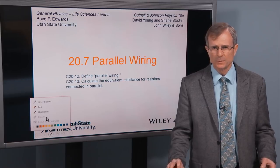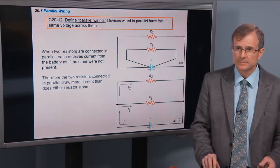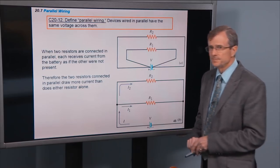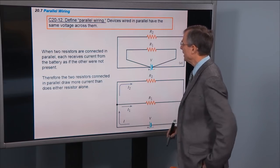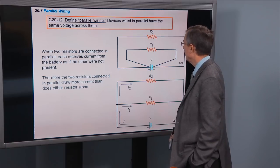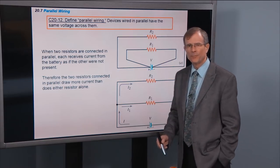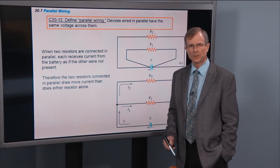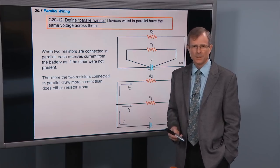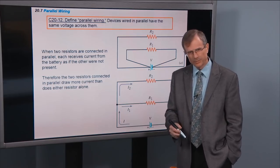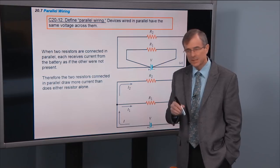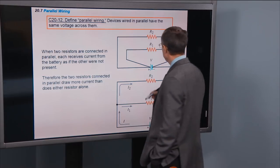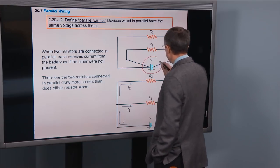First of all, let's define parallel wiring. Devices wired in parallel have the same voltage across them. You can't know if it's parallel or series unless you know where the battery is — here's the battery.